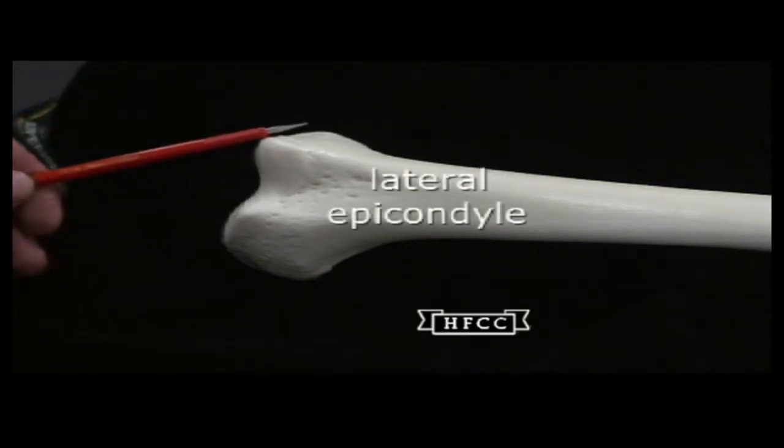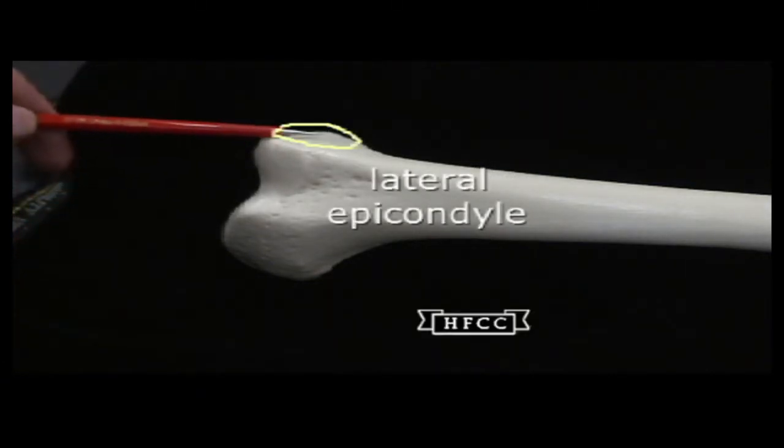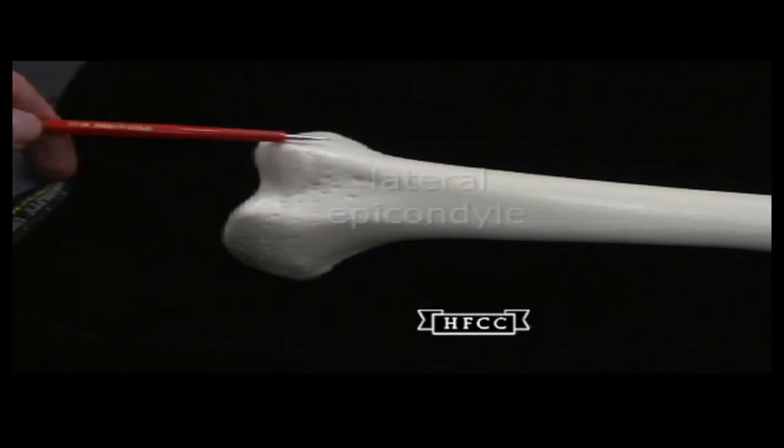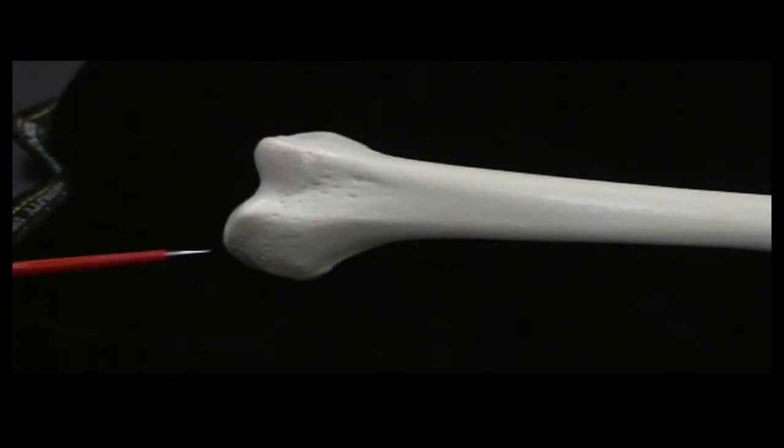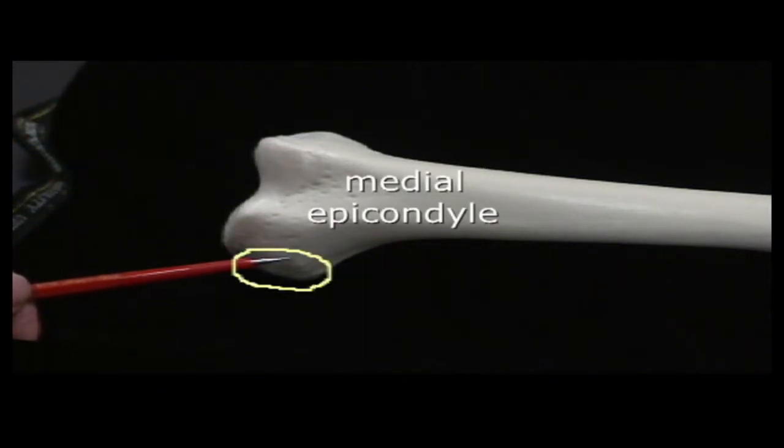And that articulates with the tibia. Then the epicondyles, these are for muscle attachments and ligaments for the joint. There's a lateral epicondyle and then over here in yellow again circled is the medial epicondyle.